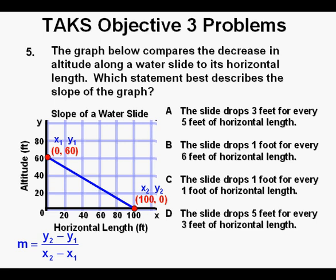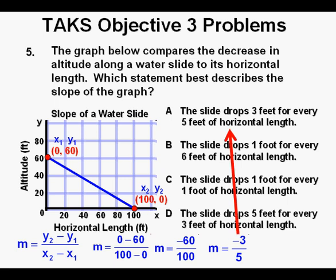And after substituting x1 and y1 and x2 and y2, that becomes m = (0 - 60) / (100 - 0), and that simplifies to -60/100, which finally simplifies to -3/5. And that is dropping 3 feet for every 5 feet of horizontal length. And so our answer is A.